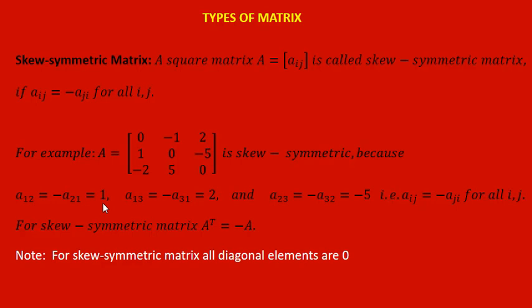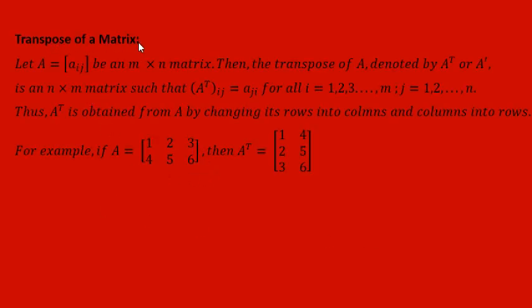Transpose of a matrix: let A equal to Aij be an M into N matrix. Then the transpose of A, denoted by A transpose or A dash, is an N into M matrix — that is, we interchange rows with columns — such that A transpose Ij equals Aji. With a given example: for matrix A, we find A transpose by interchanging the first row with the first column and the second row with the second column. That is how we find the transpose of a matrix.